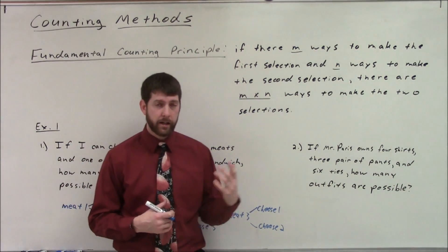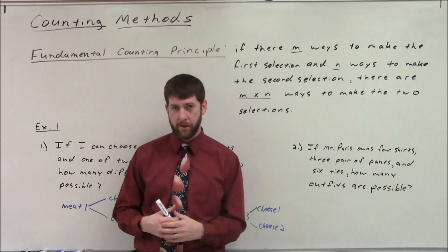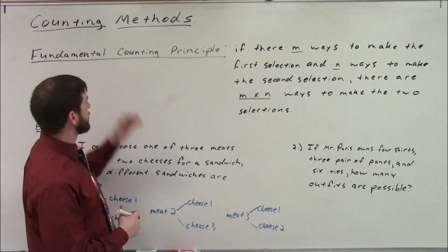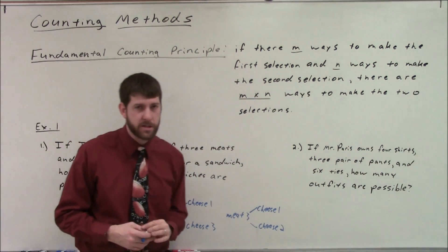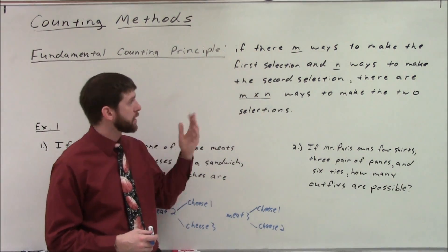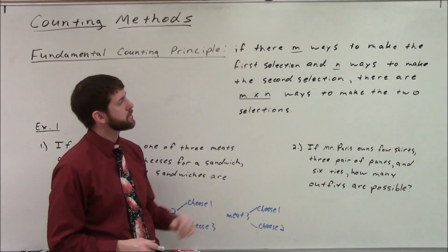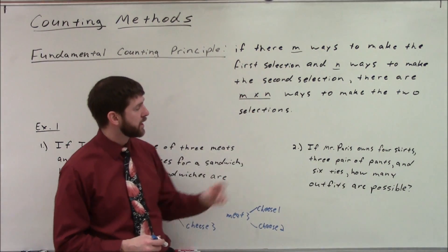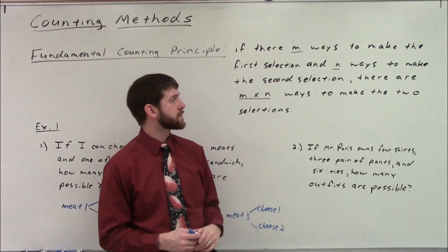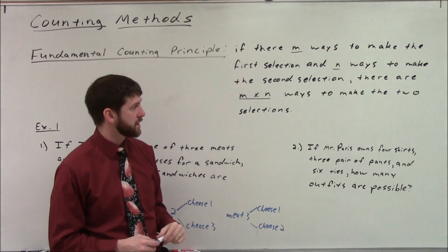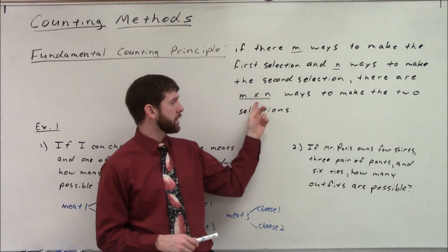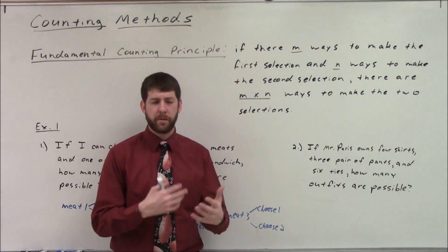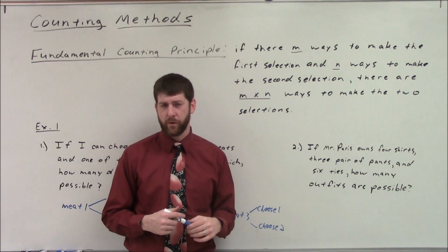The first counting method, which all of them are really based on, is the Fundamental Counting Principle. It says: if there are m ways to make the first selection and n ways to make the second selection, there are m times n ways to make the two selections. You've played around with this before in prior courses.